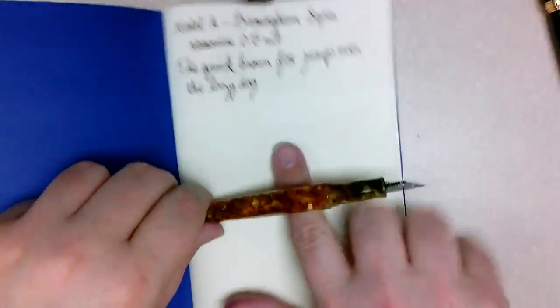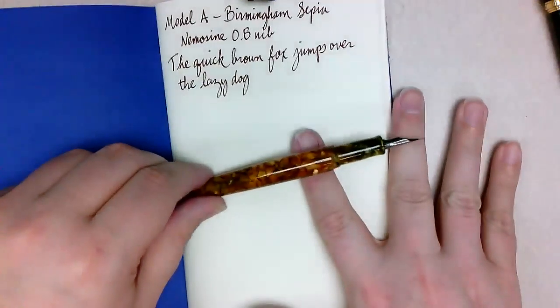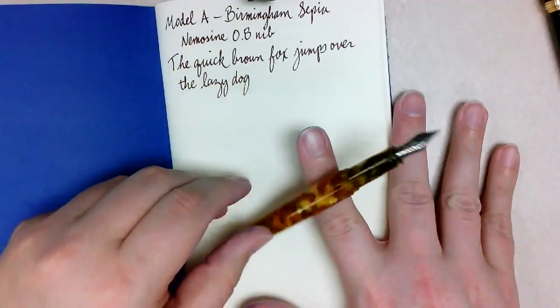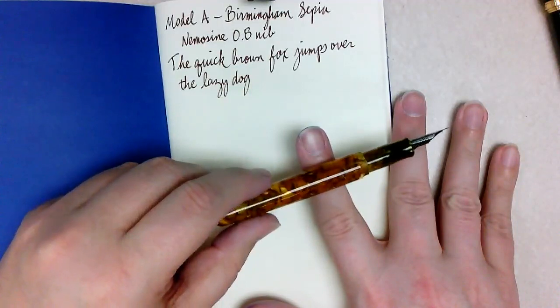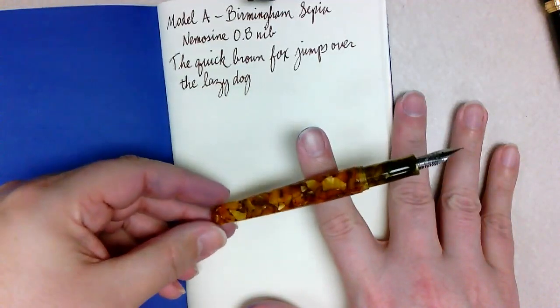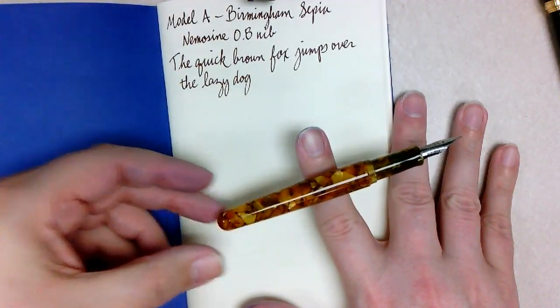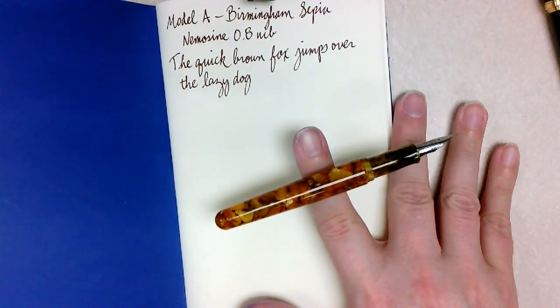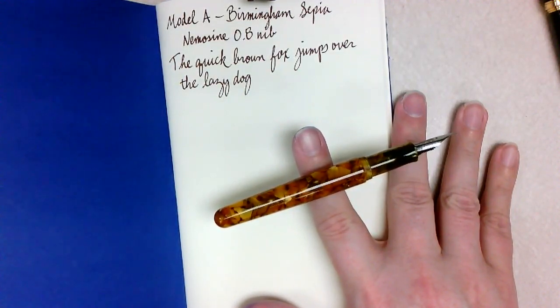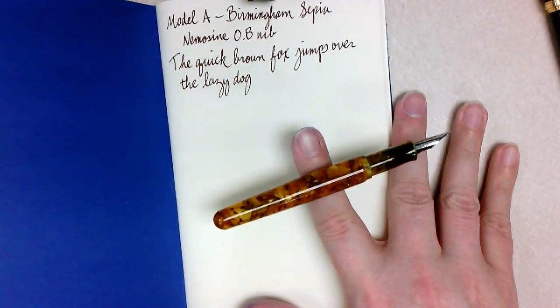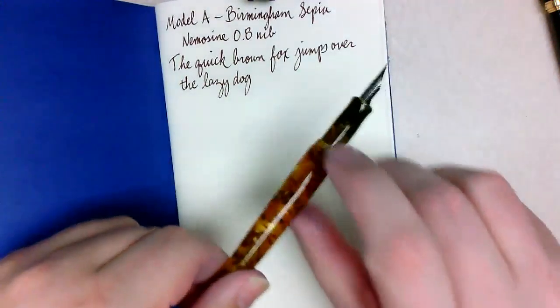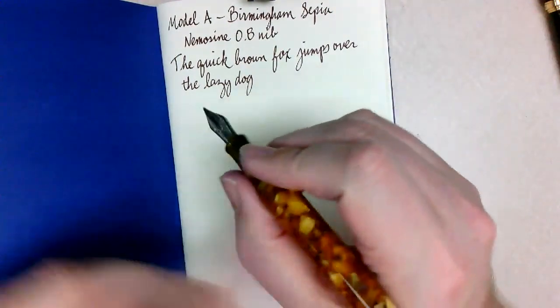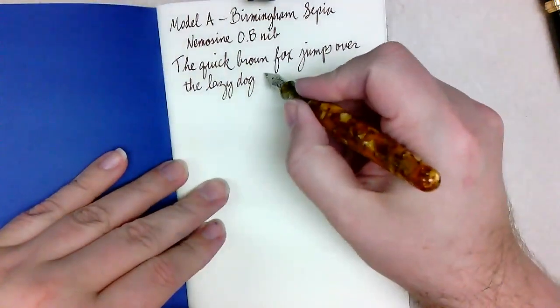And so as far as where this thing balances, the center of balance. Let's see if I can make this go without rolling. This is the tricky part. Is that it tends to balance right about there. So that's the center of balance. That's where it wants to be. That's where, granted I have like a half-full converter in there. But you're going to have to have something in it when you're writing. So that's where it sort of balances. So that's when you're holding it up. That's pretty solidly in the middle of where your hand is. So that tends to work pretty well.